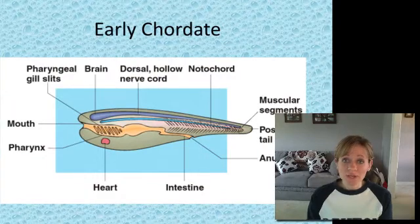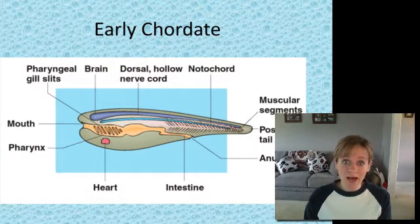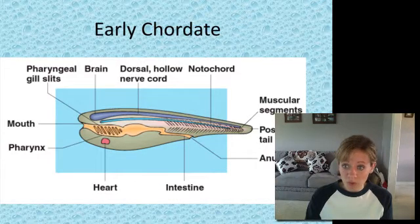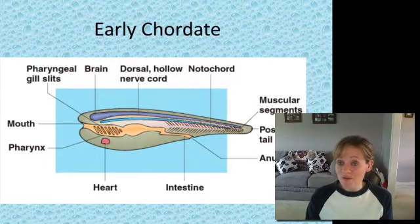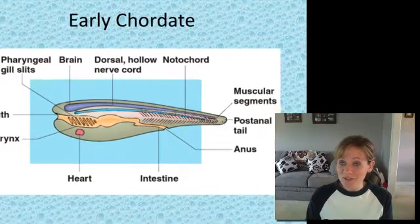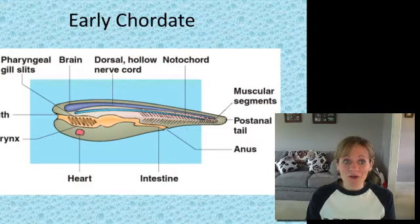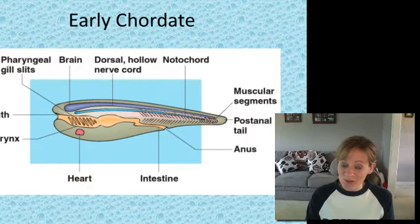Here's an example of a very early chordate and the four characteristics it would have: a dorsal hollow nerve cord, and then underneath that is the notochord. There's also a tail — when you were in embryonic form, you had a tail, and you still do. It's called your tailbone. And here are the pharyngeal gill slits, which you also have as an embryo.